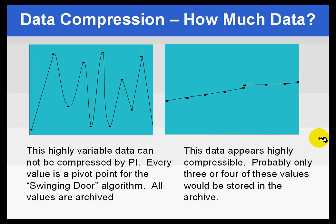Another way of describing this: when we look at things like scan rate, the amount of times you scan a value doesn't really impact how much you store, because scan rate is simply how often you look. You can look at a dull value all you want, and if it doesn't change, we're simply not going to store it. We're going to store it based on the compression deviation.